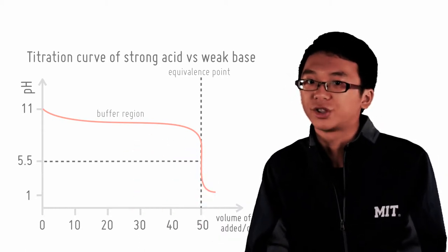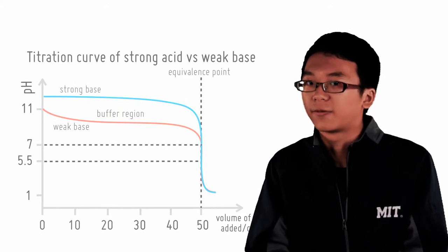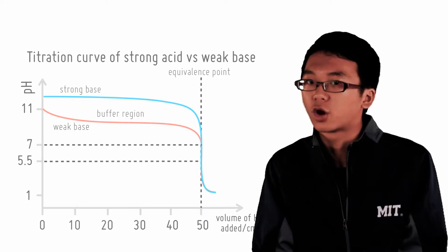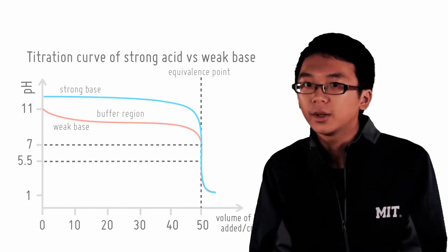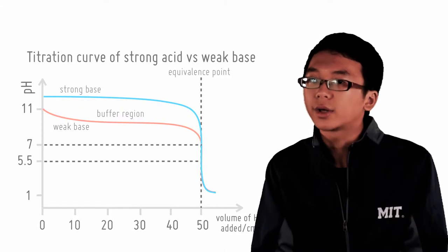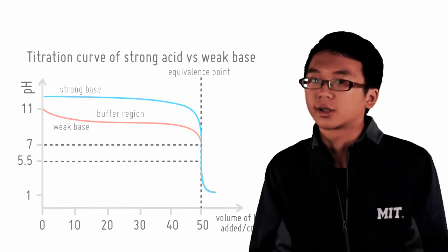Contrast the titration curve when you put a strong base inside the conical flask instead of a weak base. The pH starts out higher because it's a strong base. There is no buffer formed, and the equivalence point is somewhere much closer to 7. You can relate this to salt hydrolysis concepts.